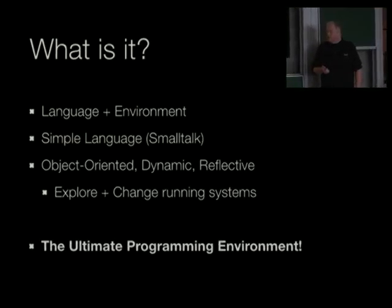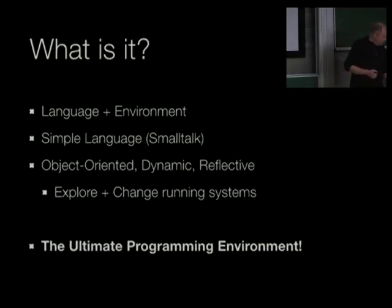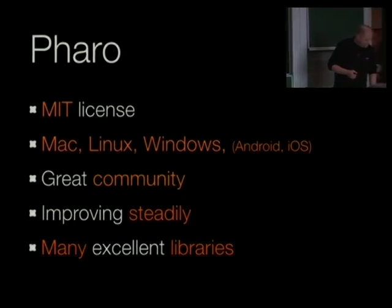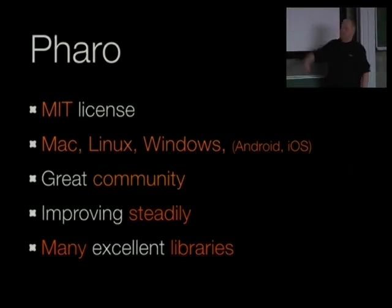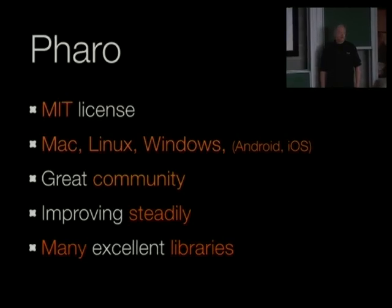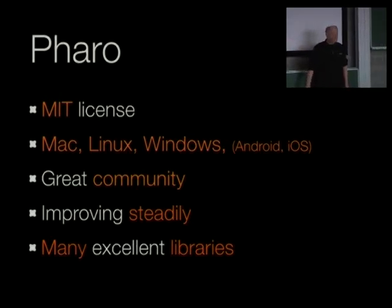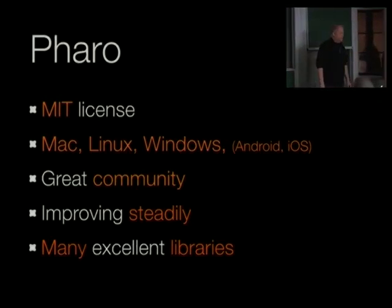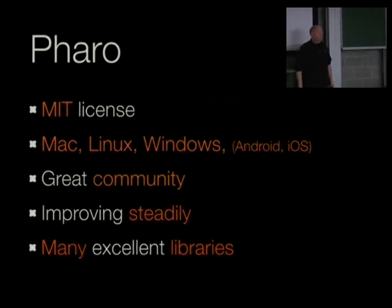The idea is that we want to build the ultimate programming environment. It's a lofty goal and we will see how it turns out, but that's the end goal. Pharo is MIT licensed. Our main platforms are Mac, Linux, and Windows. There are some people looking at the mobile space, but that's a bit difficult because they don't allow JIT compilation to be done, so it's a bit slow. We have a growing and really nice community, and Pharo is improving steadily. There are lots of libraries and external projects that use Pharo, like the BabyMock project from the first talk.